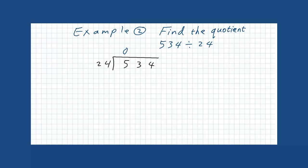35 divided by 24. The answer is 2, because 2 times 24 is 48. Subtract 13 minus 8 is 5, and 4 minus 4 is 0. Now, bring 4 down here.